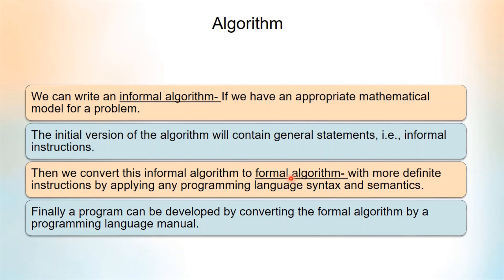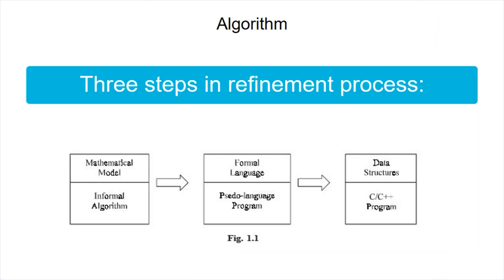After writing the formal algorithm, we can convert this formal algorithm to a program by using any programming language. So this is how a problem is solved: first we write an informal algorithm, then it will be converted to a formal algorithm, and then to the program. This is the diagrammatic representation of the three steps in this refinement process.